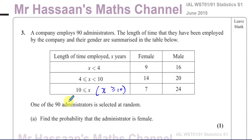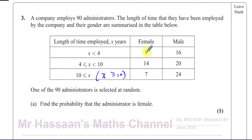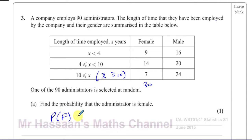One of the 90 administrators is selected at random. Find the probability that the administrator is female. If we find the sum of the female administrators, that's 9 plus 7, which is 16, plus 14, which is 30. There are 30 out of 90 altogether, so the probability that the administrator is female is 30 divided by 90, which is one third.